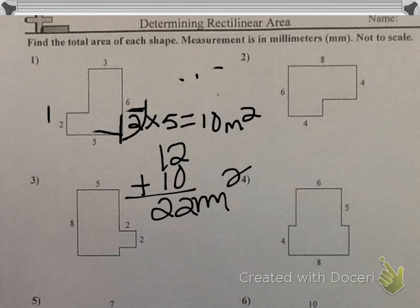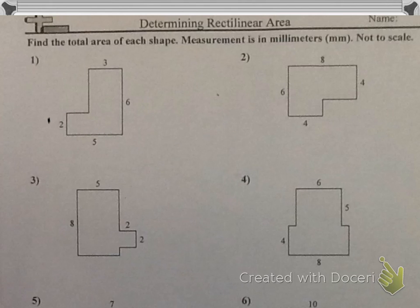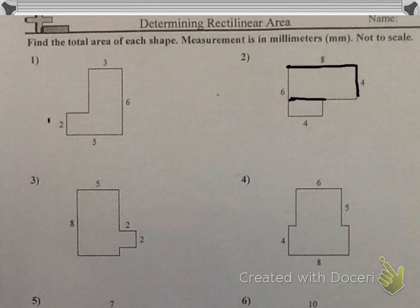Let's try number 2 also. For number 2, I can divide the rectilinear figure here, or I can divide it horizontally. When dividing it horizontally, I now have a rectangle that has a width of 8 and a length of 4. So to find the area of the top rectangle, I would use 8 times 4, which equals 32.